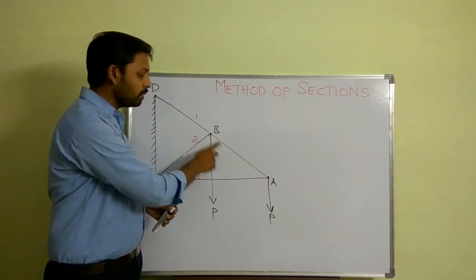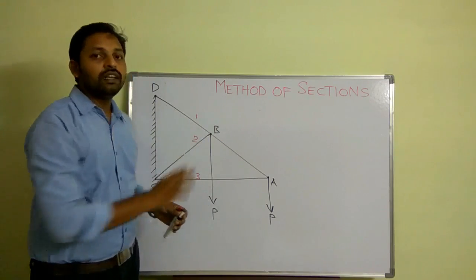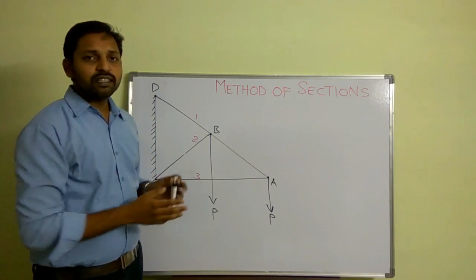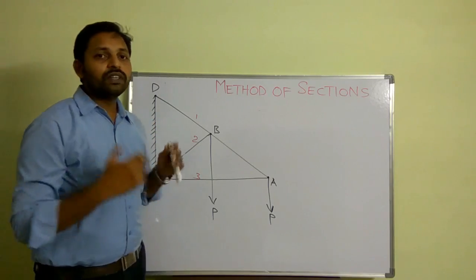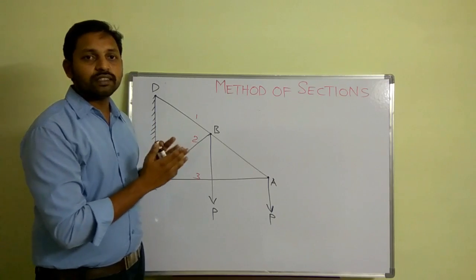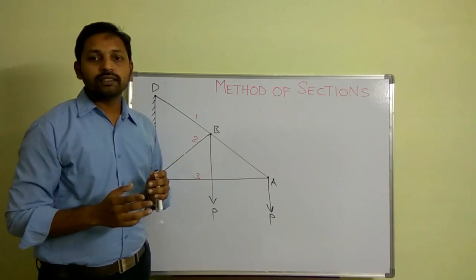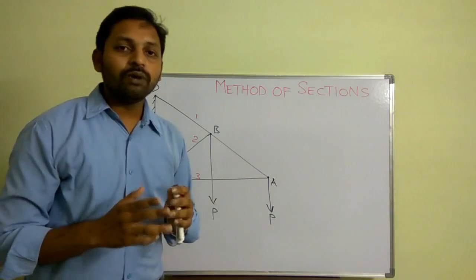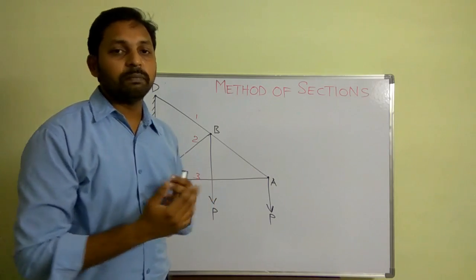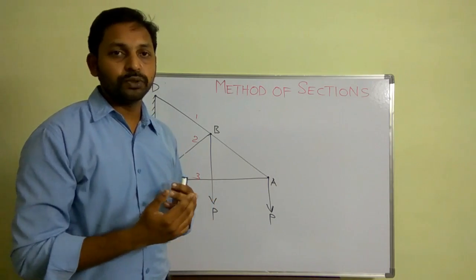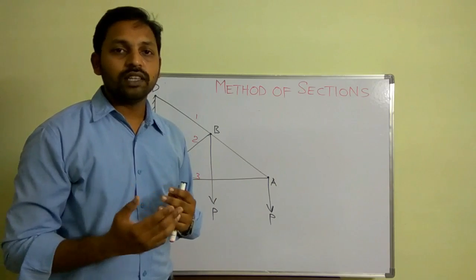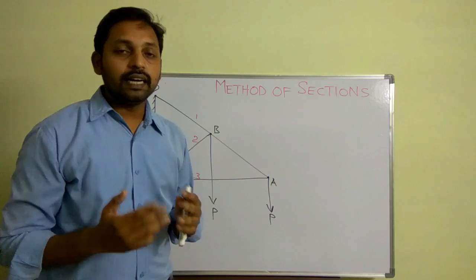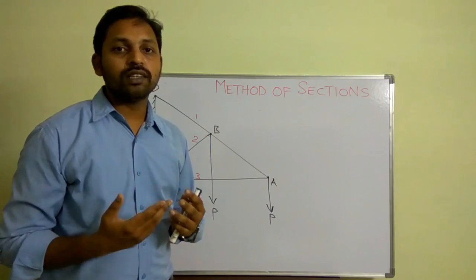The section line should not pass through joints such as B. Third, the section line you have considered should divide the truss into two clear separate unconnected portions. Fourth, consider the moment center such that unnecessary forces are eliminated.